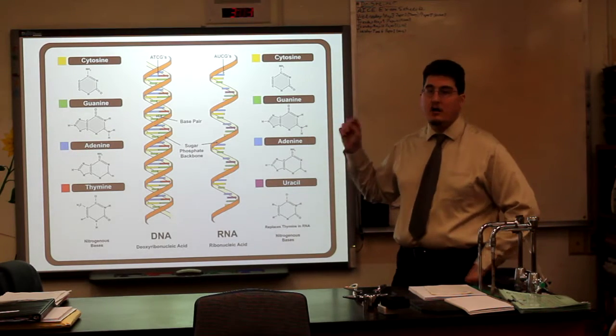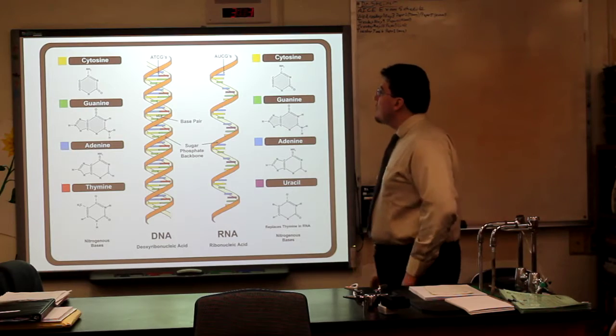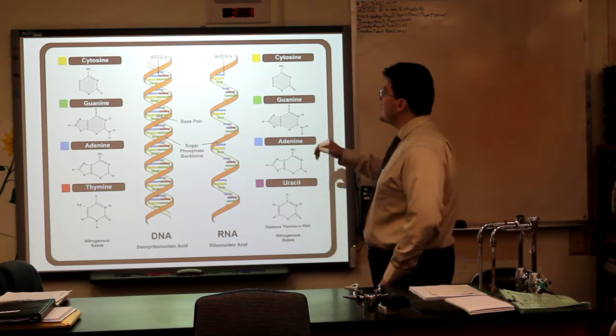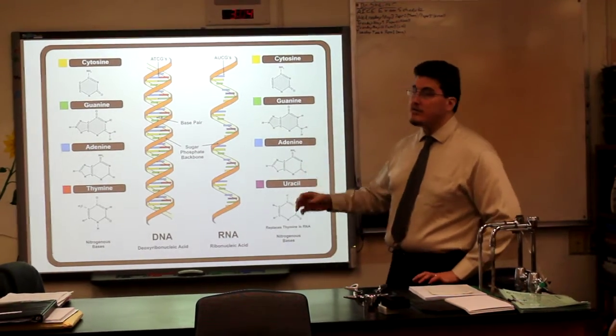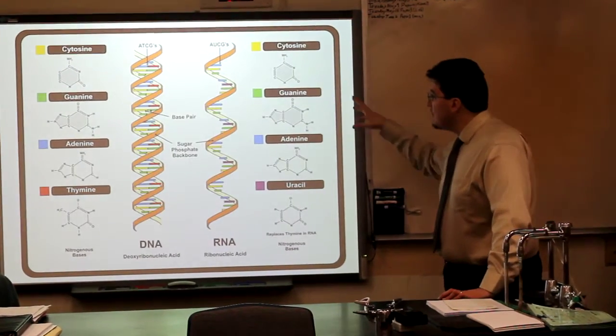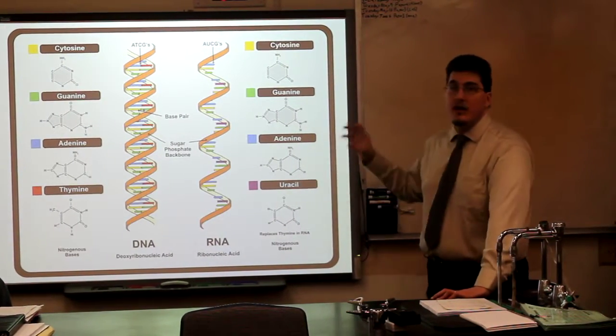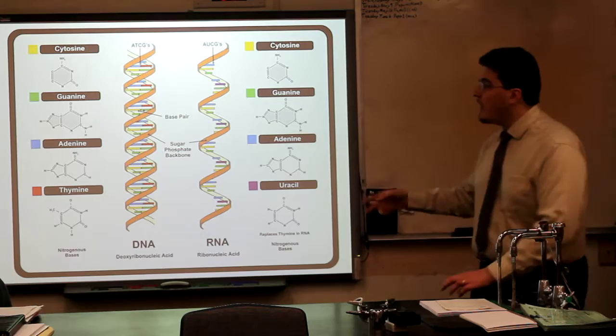We also have RNA, which exists as a single stranded polynucleotide, which has a variable sequence consisting of cytosine, guanine, adenine, and uracil. Uracil is in lieu of thymine. You use uracil instead of thymine.